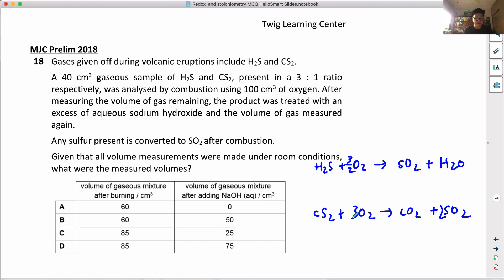It's all balanced. So 40 cm³ of this sample and the ratio is 3 to 1, which means there's actually 30 cm³ of H2S and 10 cm³ of CS2. I'm going to write down ICF, but all these are in terms of volume. This will be 30 and this is 10.